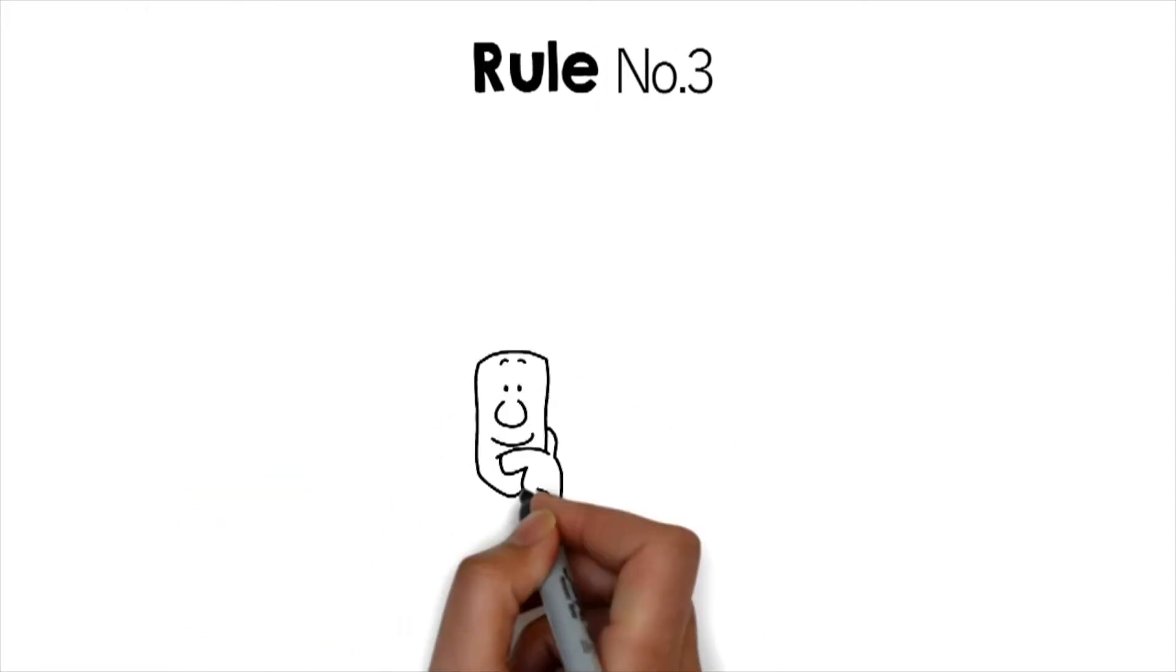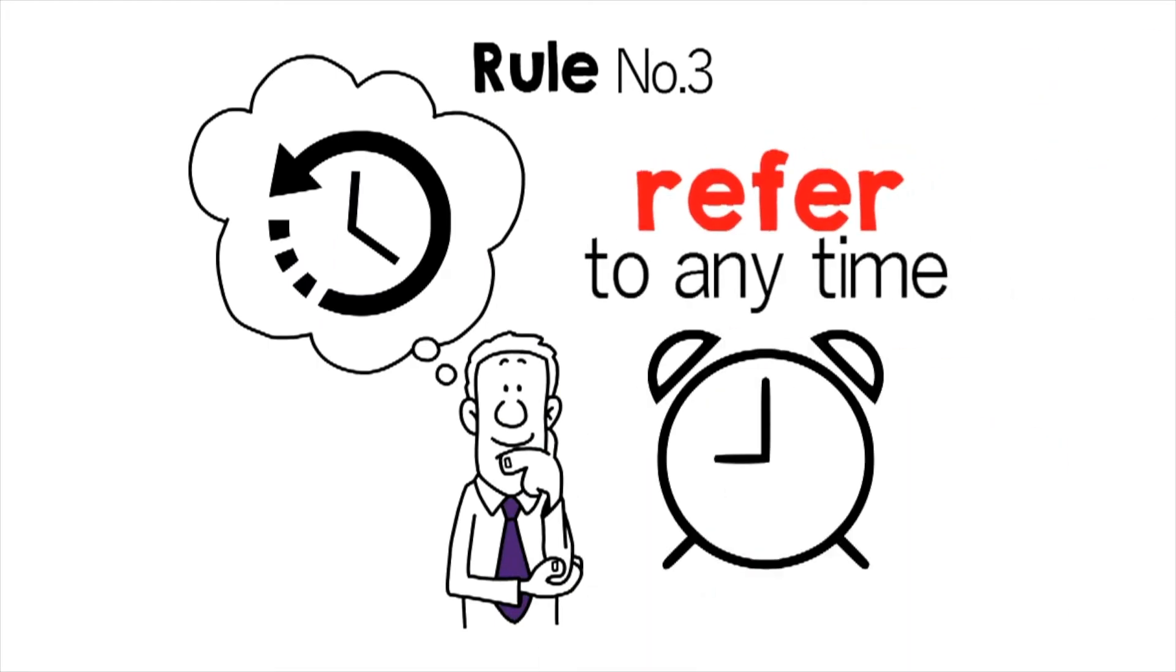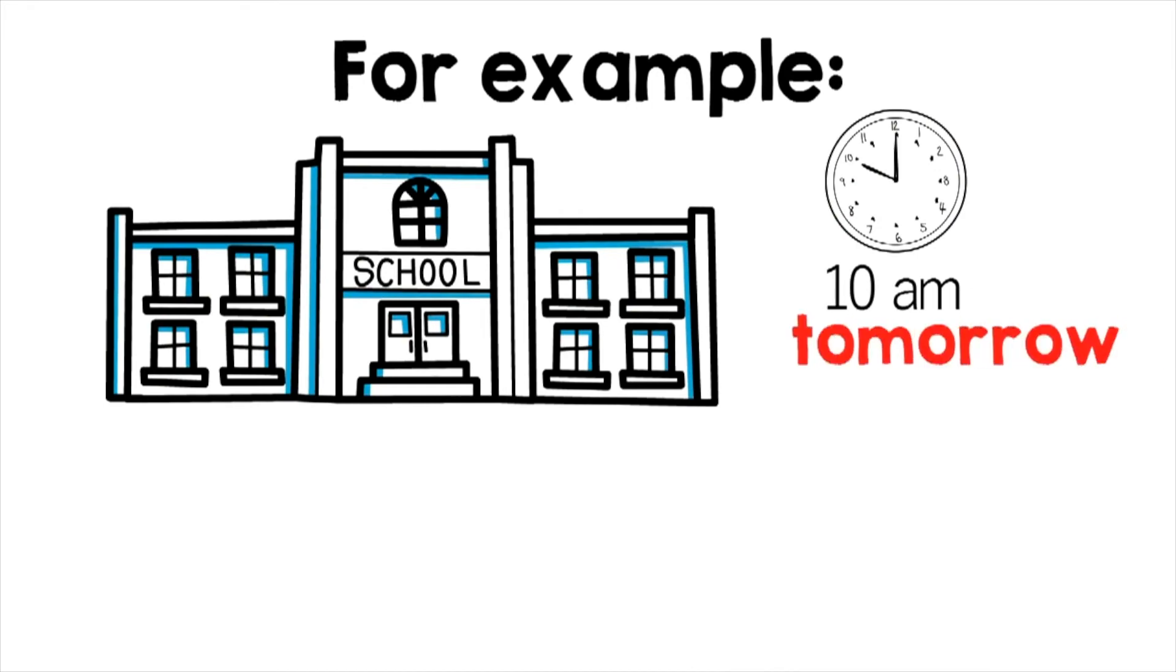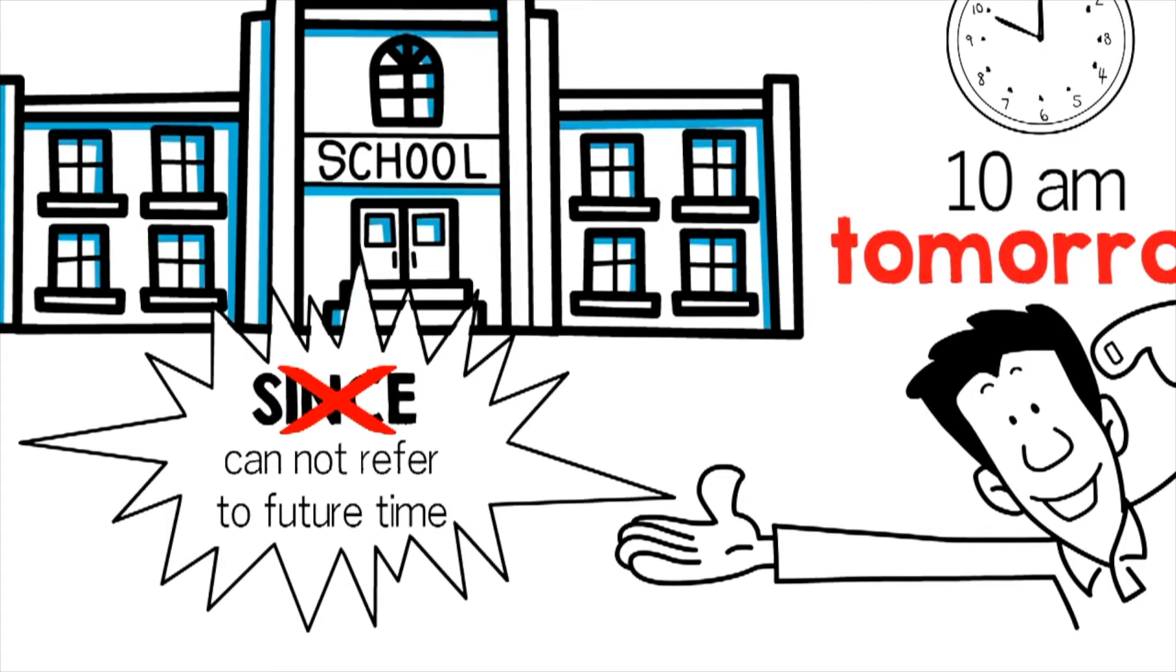Rule number three, since only refers to past time. From can refer to any time. For example, he will be at school from 10 a.m. tomorrow. You cannot use since here, as you cannot refer to future time.